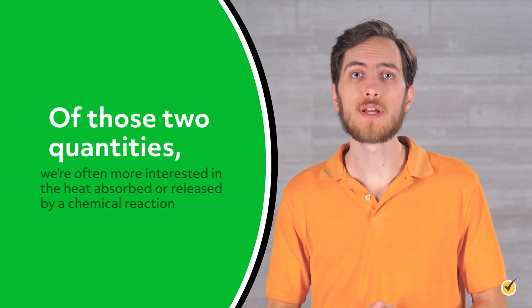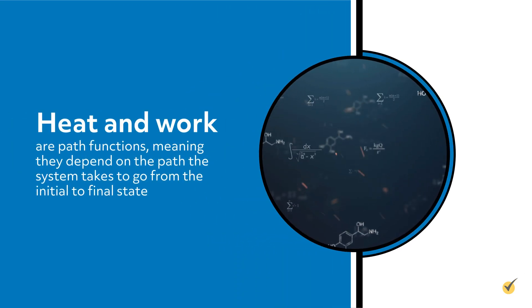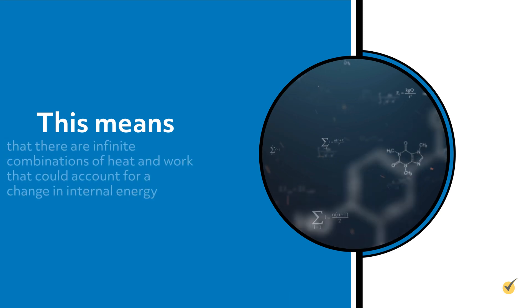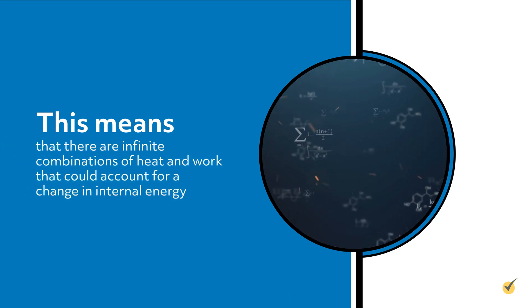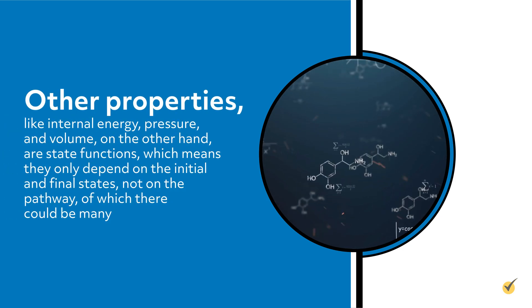Of those two quantities, we're often more interested in the heat absorbed or released by a chemical reaction. However, heat and work are path functions, meaning they depend on the path the system takes to go from the initial to final state. This means that there are infinite combinations of heat and work that could account for change in internal energy. Other properties, like internal energy, pressure, and volume, on the other hand, are state functions, which means they only depend on the initial and final states, not the pathway, of which there could be many.